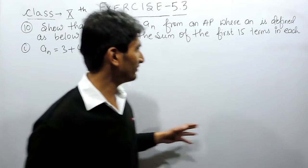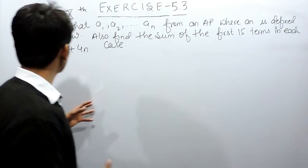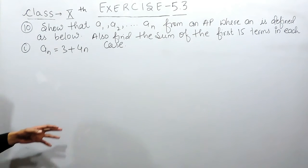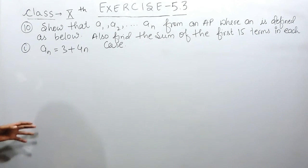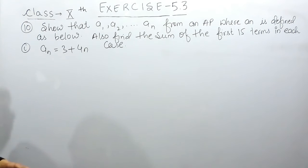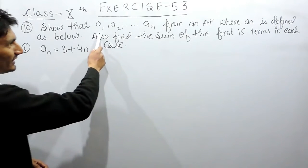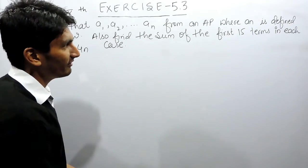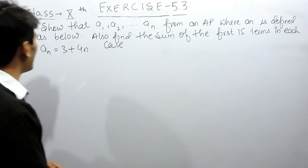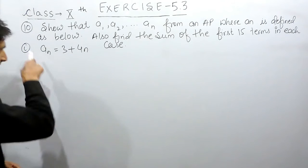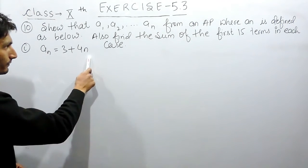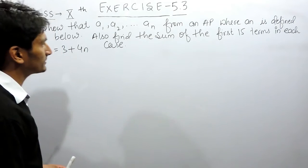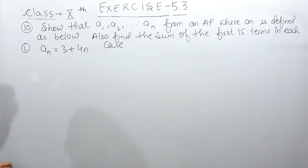Hello everyone. In this video we are going to solve the first part of question number 10, and in the next video we'll solve the next part of this same question. In this we have to show that a1, a2, until an form an AP, where an is defined as 3 plus 4n. We also have to find the sum of first 15 terms in each case.